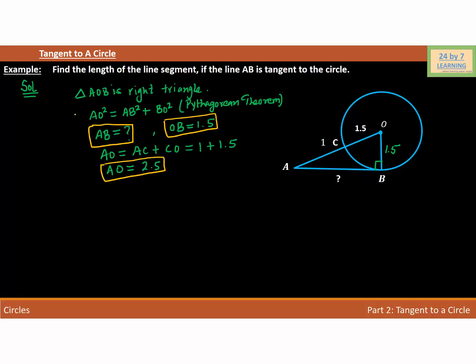So what I'm going to do is substitute these values into this equation. If I do that, I will write AO as 2.5² = AB². We don't know AB, so I will write AB² + BO, which is basically OB 1.5, so 1.5².